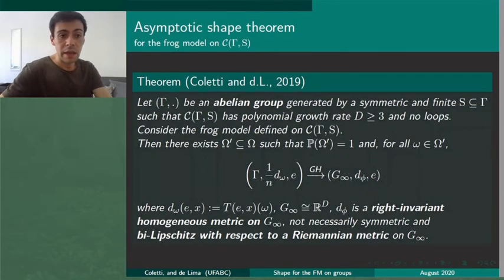Now we can state the shape theorem for the frog model in a very similar way. Here we have a random metric which converges in a pointed Gromov-Hausdorff sense to G∞ and here it is isomorphic to R^n. This d_ω is given by our activation time.